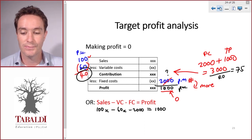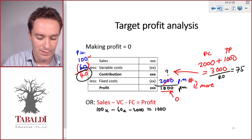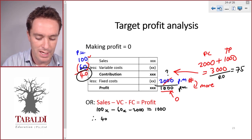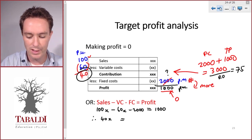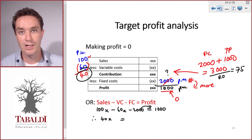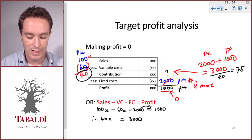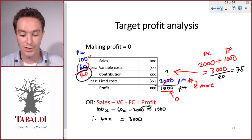So now we can solve for x. This becomes 40x equals - so if we take over the $2,000 it becomes a positive. So there you can see we add the fixed cost to the profit that we require, so that will give us $3,000.